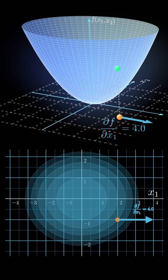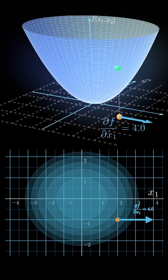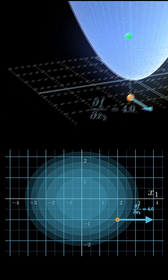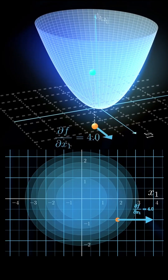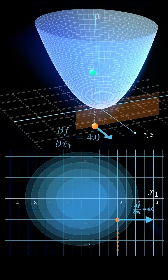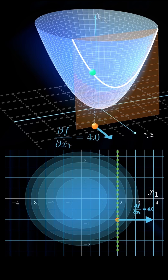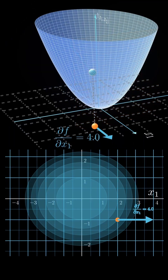Now let's look at the x2 axis. We slice the paraboloid with the plane x1 equals 2. Taking the derivative with respect to x2, the slope magnitude is also 4. But since x2 equals negative 1 is negative, the slope is negative 4. So here we draw another blue vector, length 4, pointing in the negative x2 direction.